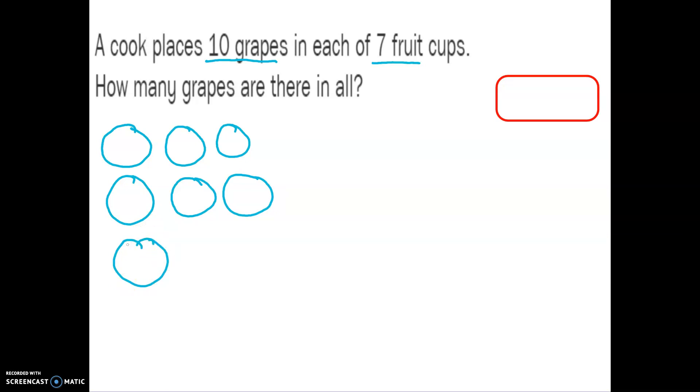I'm going to put 10 grapes in each. Remember, we're going to use tally marks to make it be nice and neat and tidy. So, 1, 2, 3, 4, 5, 6, 7, 8, 9, 10. Do that in every fruit cup. We have the 7 fruit cups. And we're giving each fruit cup 10 grapes. And then, our task is to write a number sentence and find out how many grapes there are in all.